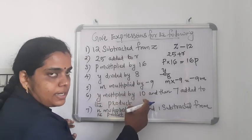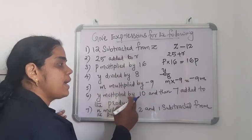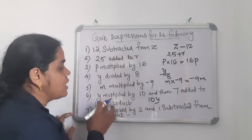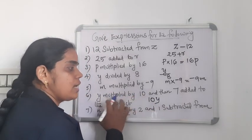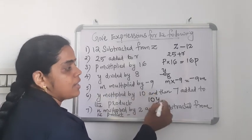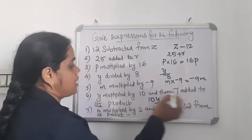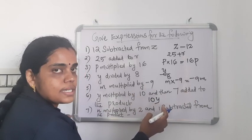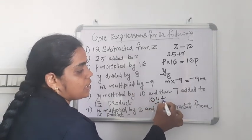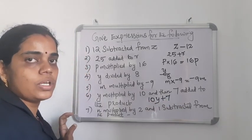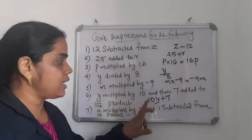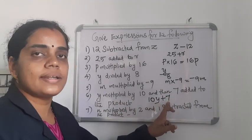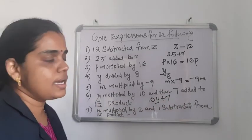Y multiplied by 10 is Y into 10, which we write as 10Y. And then 7 is added to the product. Product means this multiplication result — 10Y is the product. To this product 7 is added, so 10Y plus 7 is the required expression.